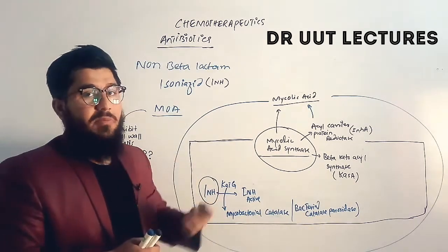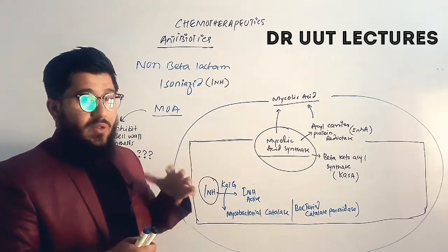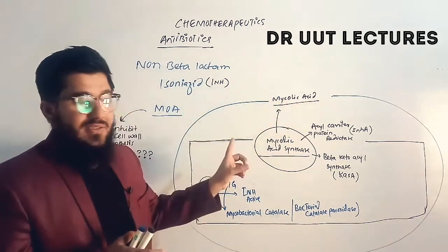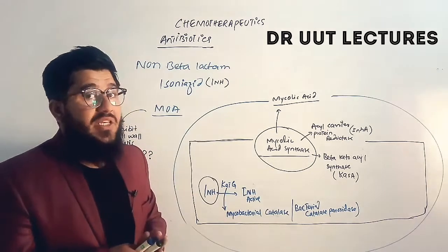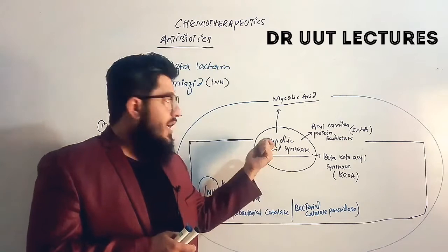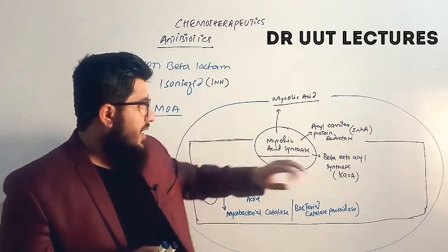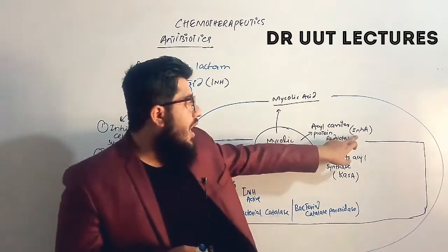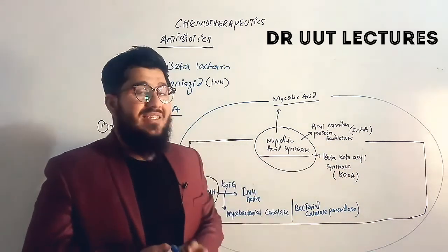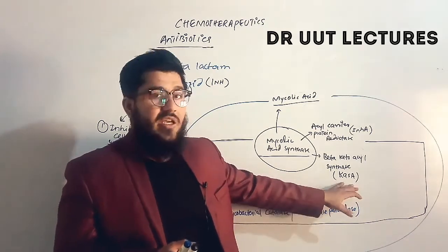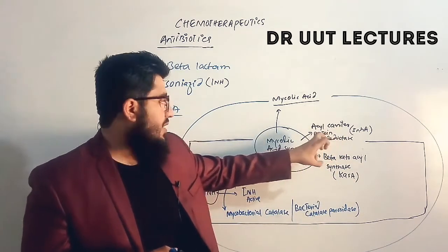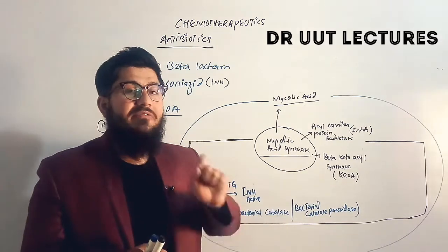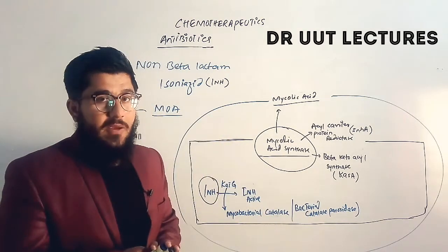Isoniazid is a mycobacterium antibiotic. Mycobacterium needs mycolic acid for cell wall synthesis, and this mycolic acid is synthesized by an enzyme called mycolic acid synthase. This enzyme is composed of two enzymes: number one, acyl carrier protein reductase, shortly written as INHA, and number two, beta-ketoacyl synthase, shortly written as KASA. By means of these two enzymes, mycobacterium produces mycolic acid, which plays a vital role in cell wall synthesis.